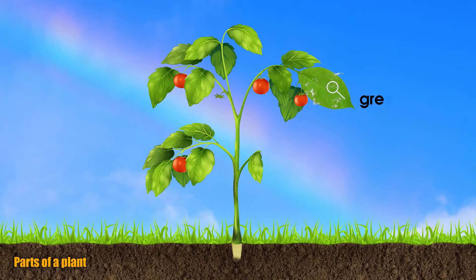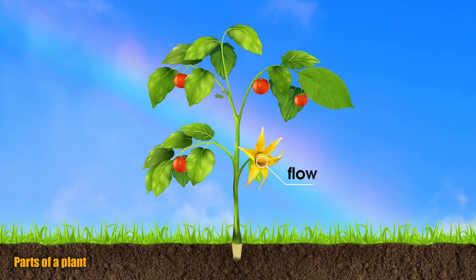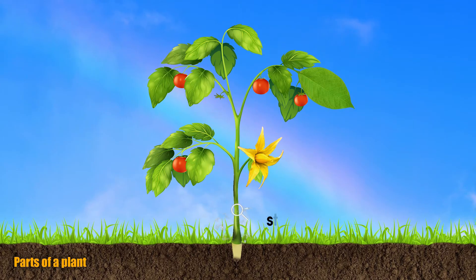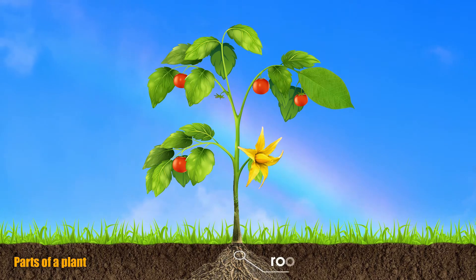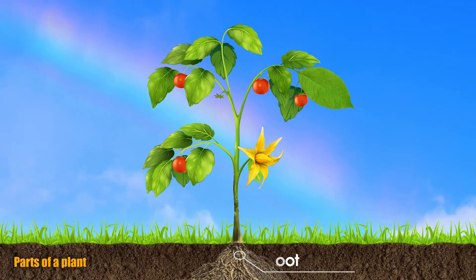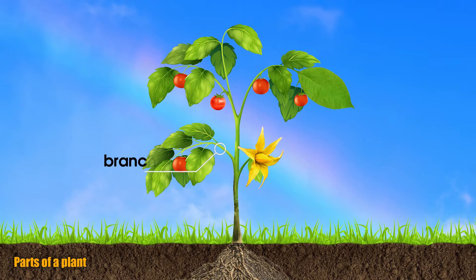Green leaf. Flower. Stem. Root. Fruit. Branch. Bud.